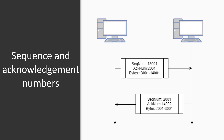In this example, we see that the client on the left sends an acknowledgement number of 2001, which means that it has received data bytes up to byte 2000 and expects to receive byte 2001 next. Hence, the client on the right sends data bytes starting from 2001.